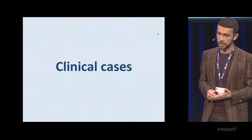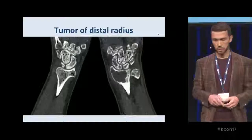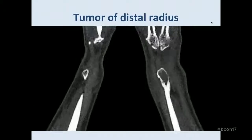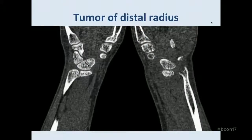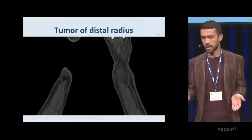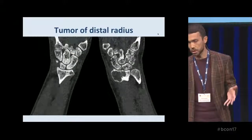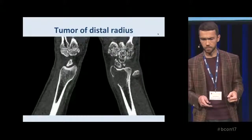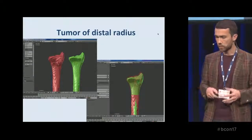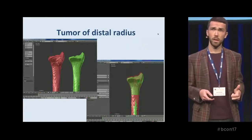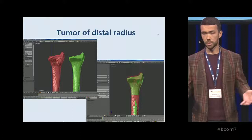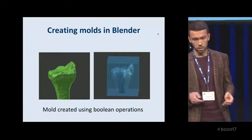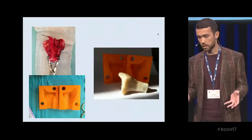Now for some clinical cases — there will be pictures of surgery, so if anyone's not comfortable watching blood, you can close your eyes for a moment. The first case: a patient had a tumor of the distal radial bone around the wrist. This is what CT looks like without 3D reconstruction — just 2D black-and-white slices the surgeon scrolls through. On the right you can see a big hole under the wrist. We made a 3D reconstruction: the red model is the affected bone, the green is the healthy one, then aligned one over the other. The affected bone with the tumor was removed, a mold was created, 3D printed, and an implant cast from it.